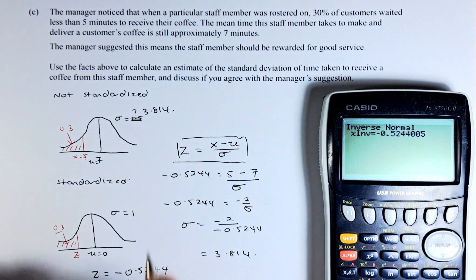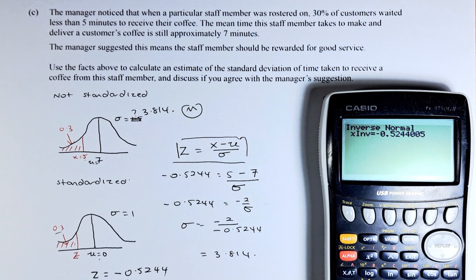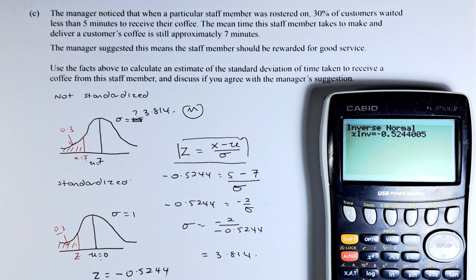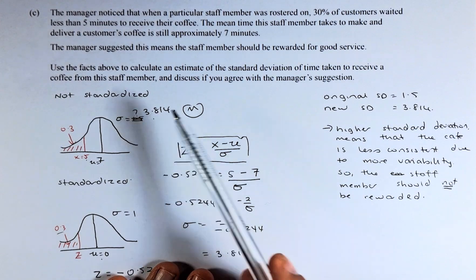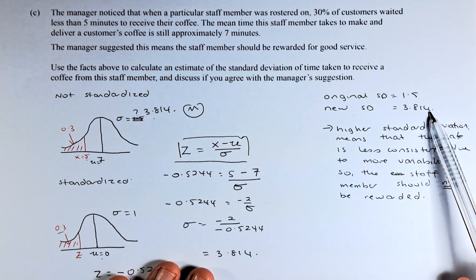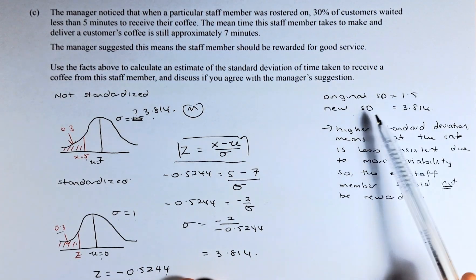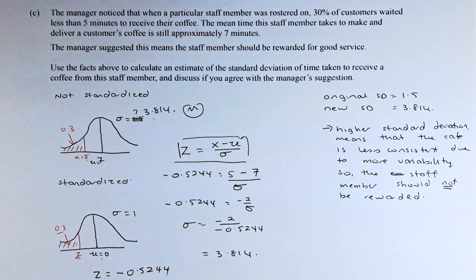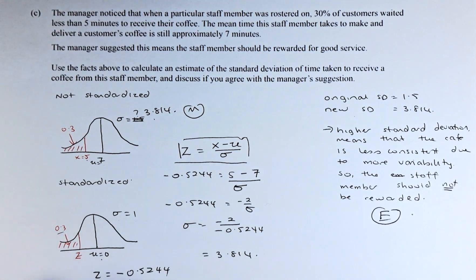Once you calculate the sigma that will give us the merit, we need to answer the question about whether you agree with the manager's suggestion. I've written there: original standard deviation in the first question was 1.5. Now we have 3.814 with this new staff member. The higher standard deviation means the cafe is less consistent due to more variability. So the staff member should not be rewarded in this case. If you can answer that part of the question, you get excellence and you'll get an E7 for this paper. Cheers everyone and have a good day.